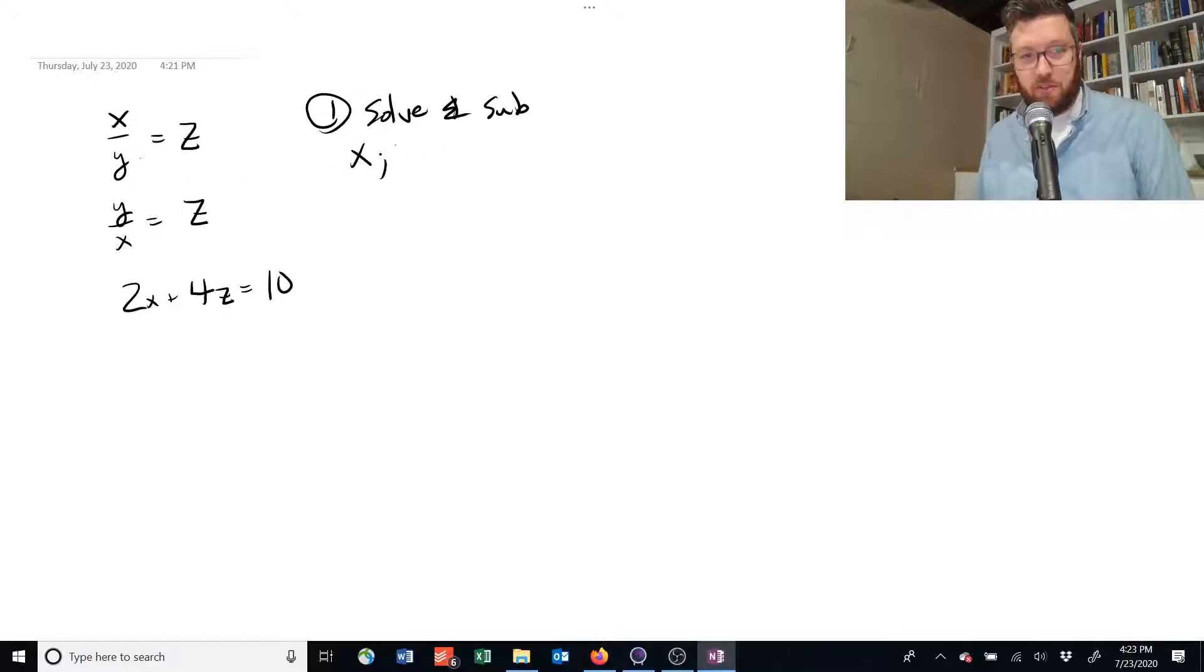So to do that, we can say, let's use this first equation. This looks really useful for that. We have x over y equals z, which tells us that x, if we multiply both sides by y, we get that x is equal to z times y, because they cancel out there. All right.